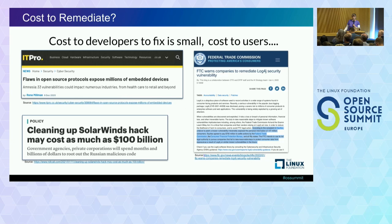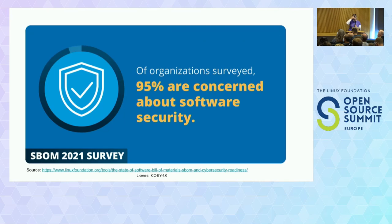Taking open source software and knowing it has the potential to hit a lot of these things is going to be catching them. Amnesia 33 was very much an issue in the embedded space, for instance, and had a fairly wide ripple through many places.